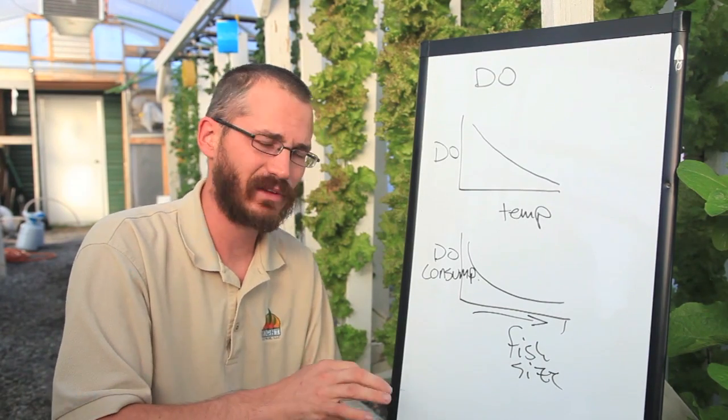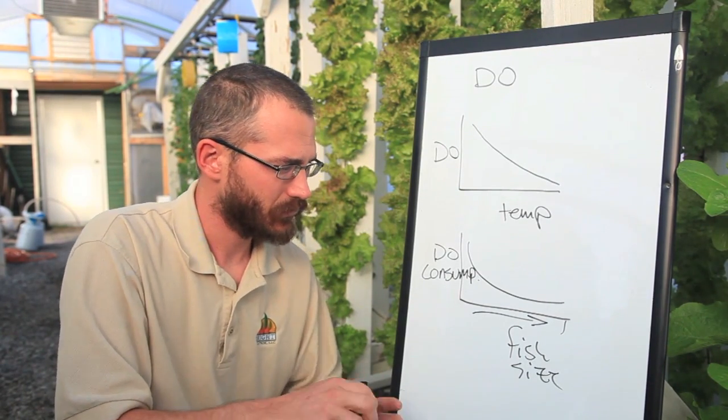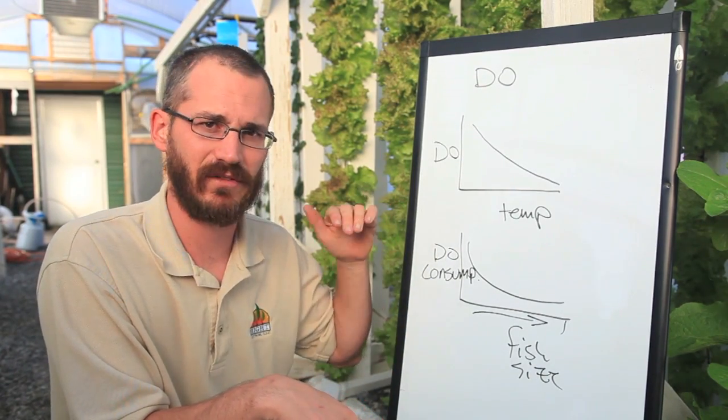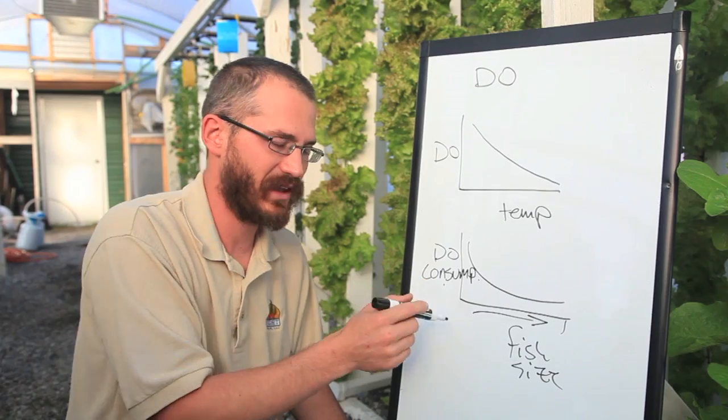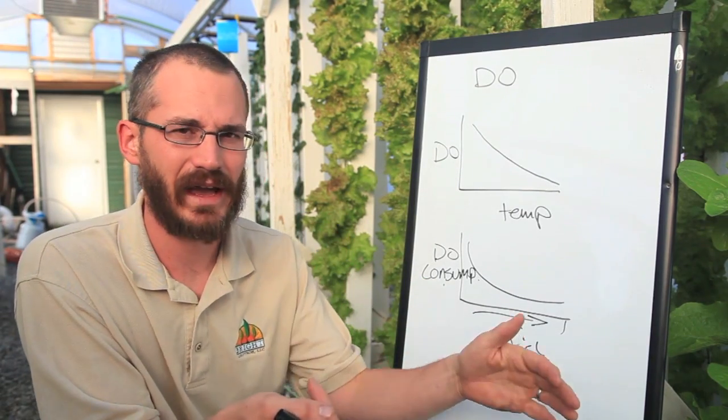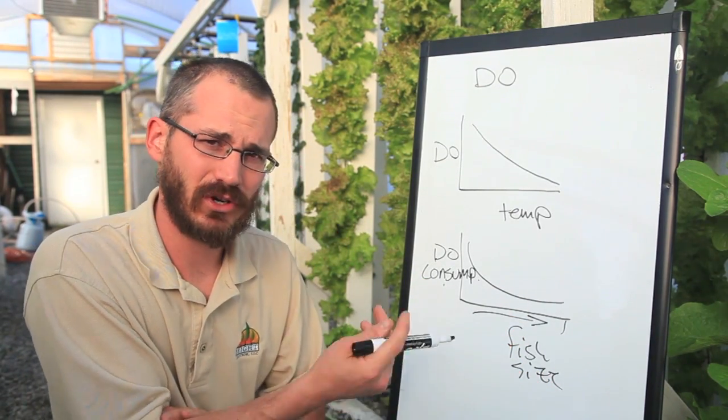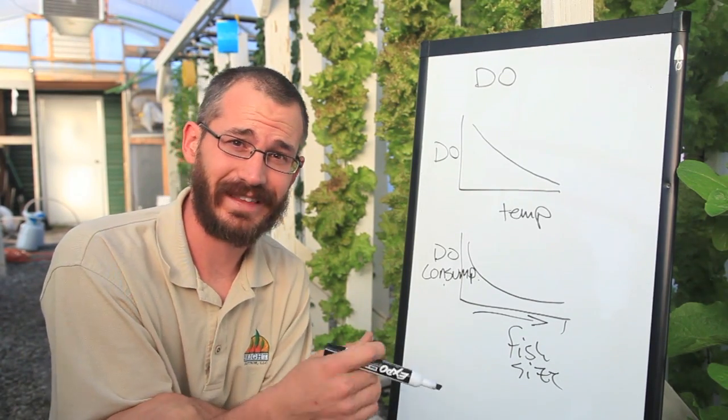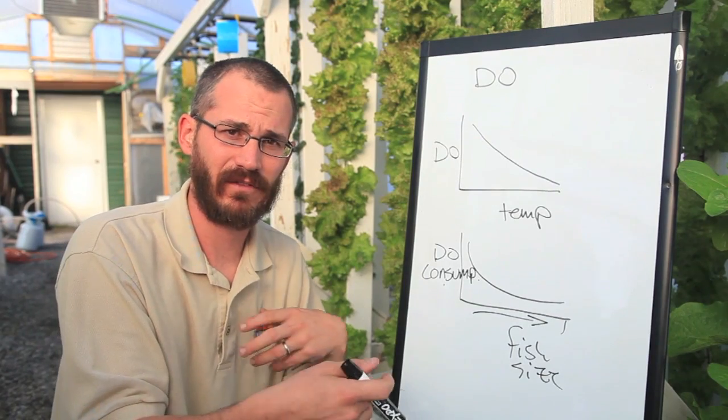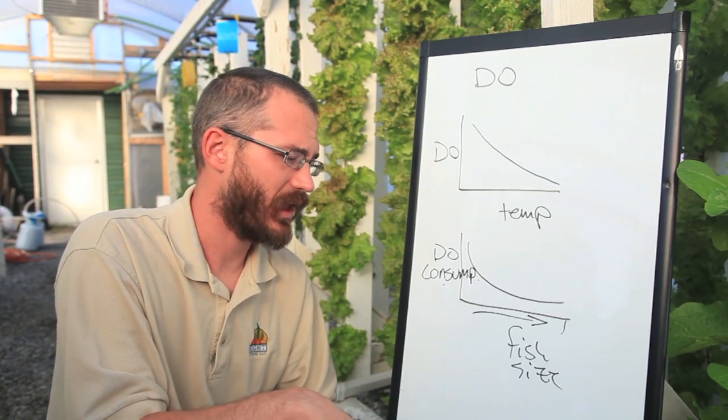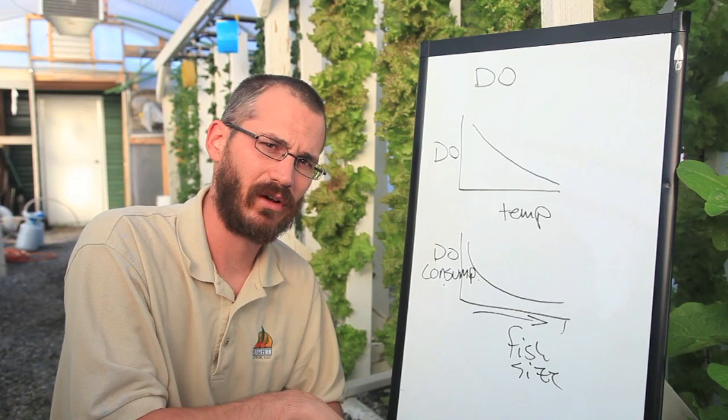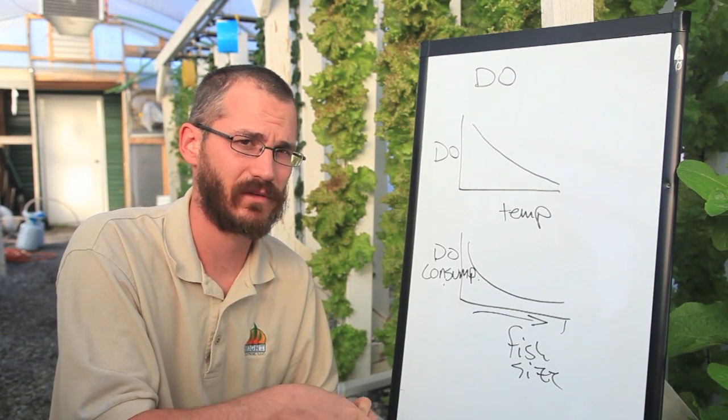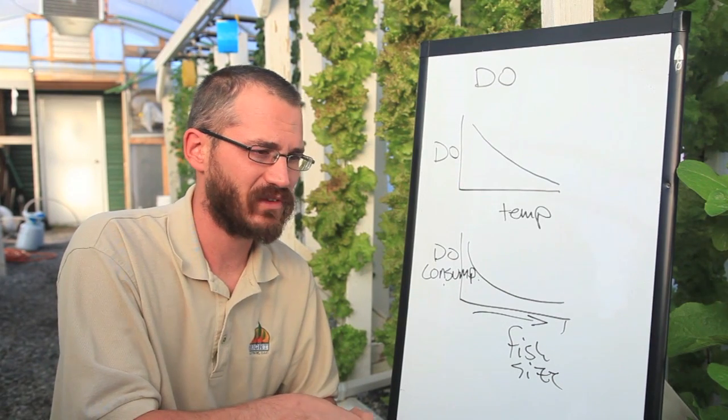You just basically want to minimize all of the negative variables that can impact your dissolved oxygen, whether that's consumption and small fish, whether that is really high temperatures, or even choosing the right kind of fish for the kind of variables you're going to see. Now, fortunately, fish like tilapia, because they have adapted to warm water, they are adapted to consuming less dissolved oxygen. So they can live at very low levels of dissolved oxygen compared to other fish. But all of these things are important to realize.